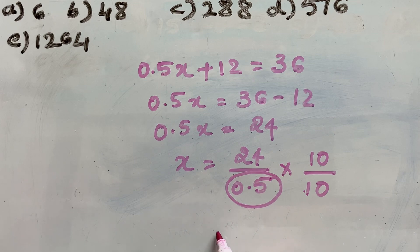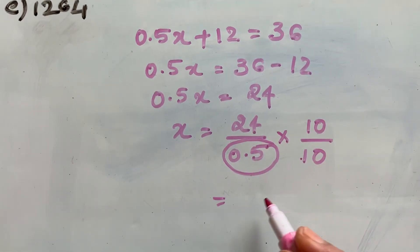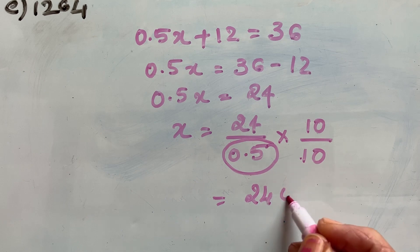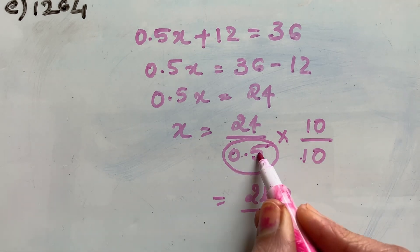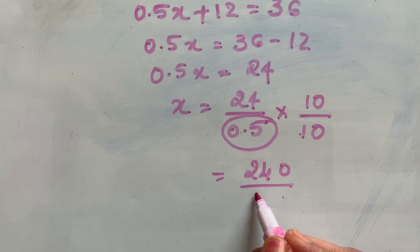What happens now? 24 times 10 which is 240. 0.5 times 10 which is 5.